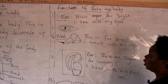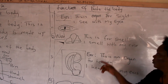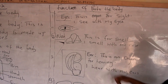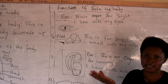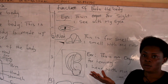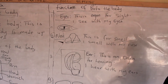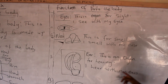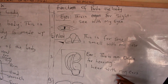The next one is number three — that is ear. This is an organ for hearing. We use our ear to hear things. Children, repeat after me: I hear with my ears.